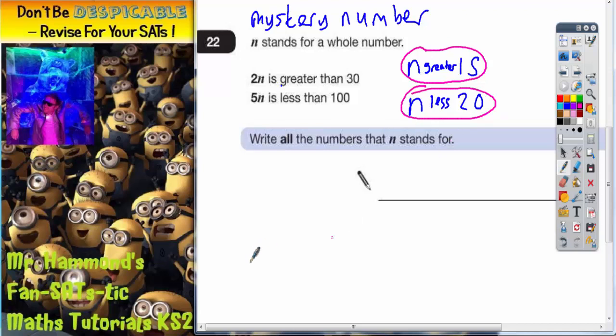So if I write all the numbers out: 15, 16, 17, 18, 19, 20. There's all the numbers between 15 and 20. Greater than 15 but less than 20 is these numbers here.